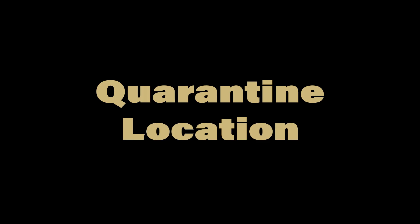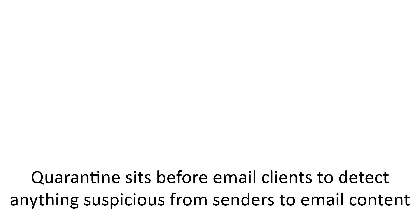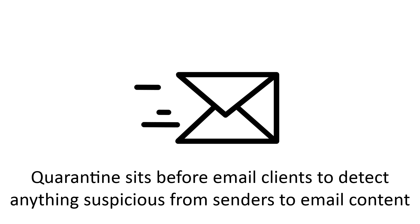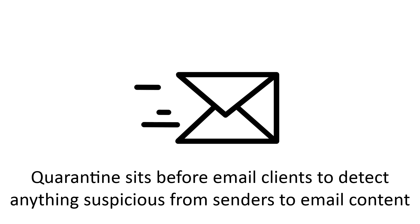First up, we'll briefly go over where quarantine is located and how it functions in relation to your email client. Quarantine is a secure area that sits before your email client like Outlook. All emails undergo security checks, and if the system detects anything suspicious, the email is sent to quarantine for further review. This proactive approach protects your inbox from potential threats and provides a more secure email experience.